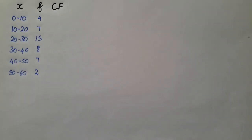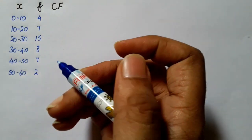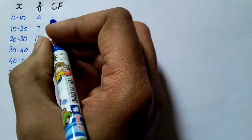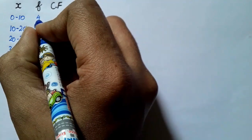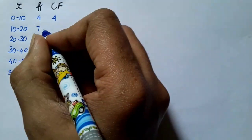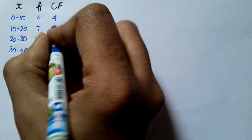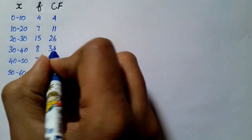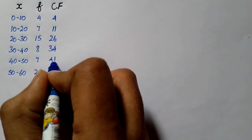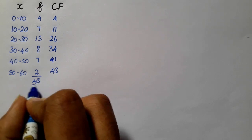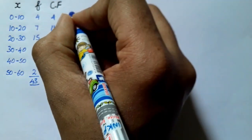Let's check the x and f values, and now calculate the cumulative frequency (cf). The first row cf is 4. Next, 4 plus 7 is 11, then 11 plus 15 is 26, 26 plus 8 is 34, 34 plus 7 is 41, and the last total is 43. Total n is 43.